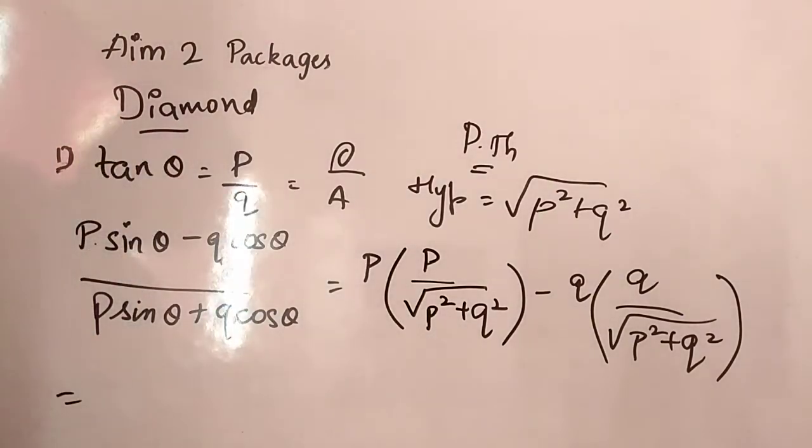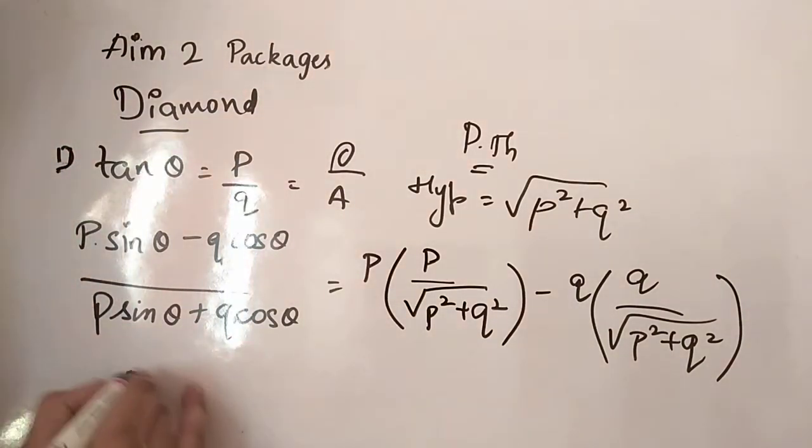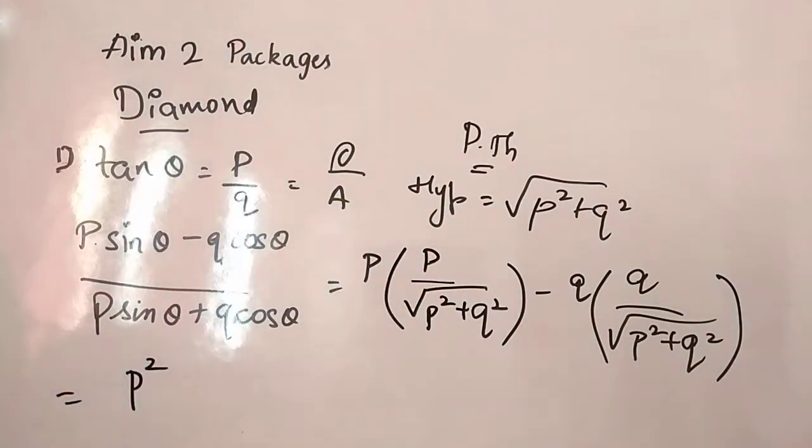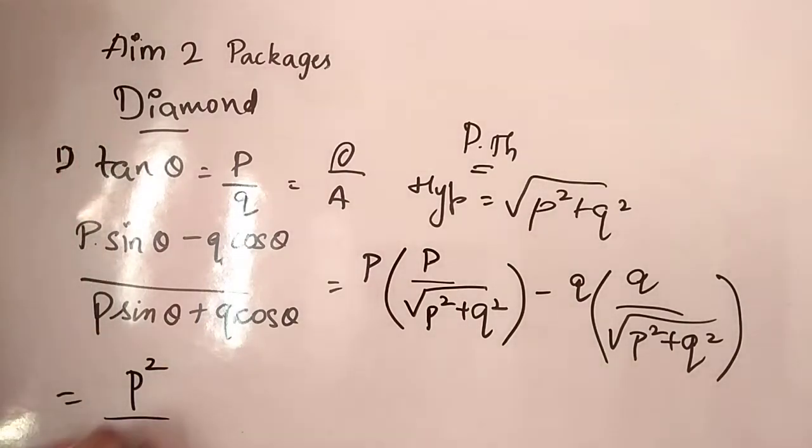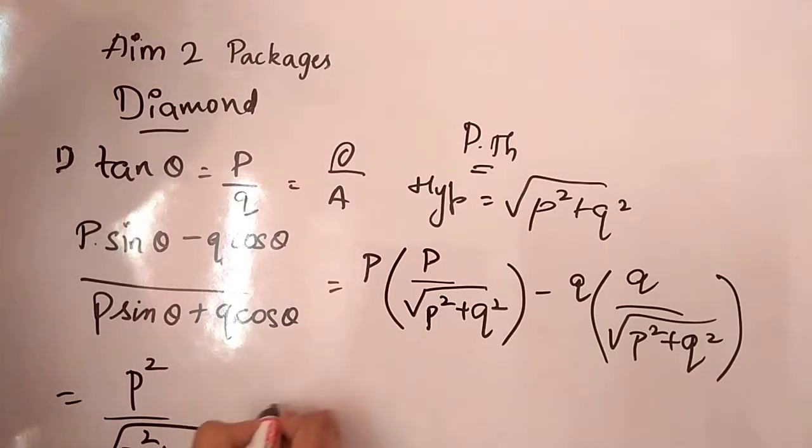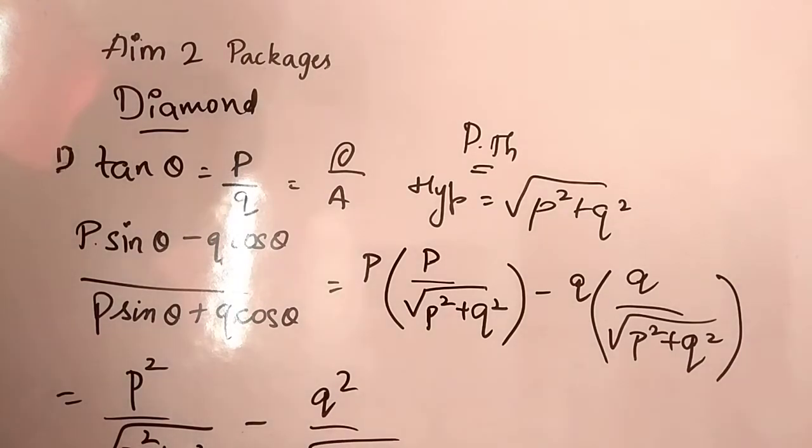So it is P square, so P into P is P square only, right? That's why, divided by square root of P square plus Q square minus Q into Q, Q square by square root of P square plus Q square.